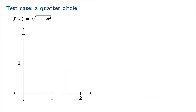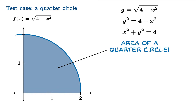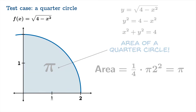Now let's test drive these methods. Here's a function: f(x) equals the square root of 4 minus x squared. We know the graph should be a quarter circle on the interval from 0 to 2. We can do a little algebra — if we call the value y, square both sides, and add x squared to both sides, we recover the equation of a circle with radius 2 centered at the origin. So taking the positive square root on the interval from 0 to 2 gives us a quarter circle. We actually know the area of this quarter circle exactly: it's a quarter of the area of a circle of radius 2, so it's pi. We'll use that to test these approximation methods.